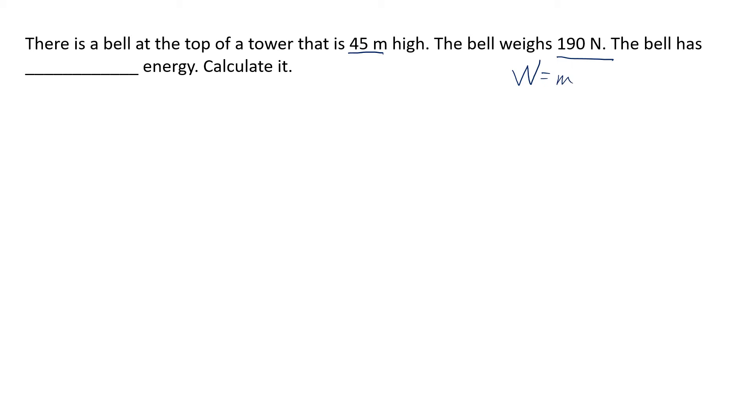Newtons is m times g so 190 newtons is m times g already. Just so you know this is not in kilograms, that would be a mass. This is already in the force of gravity on it or it's in weight. The bell has blank energy, calculate it.